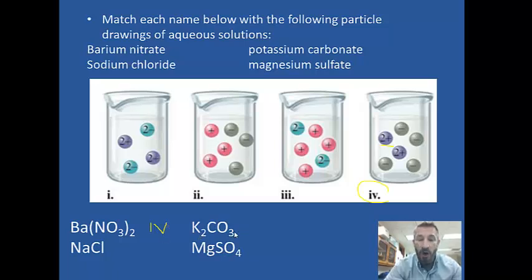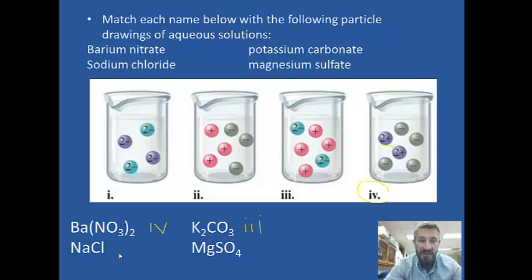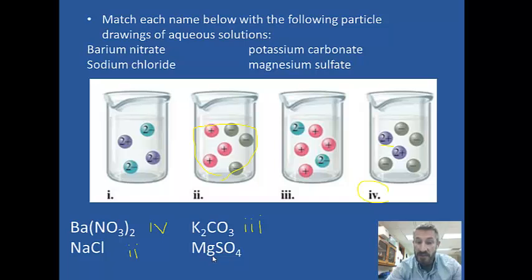Next, potassium carbonate: potassium has a +1 charge and carbonate has a −2 charge, so there's a 2-to-1 ratio — for every 1 negative-2, there should be 2 positive-1s. That corresponds to drawing 3. Next, sodium chloride — sodium is +1 and chloride is −1, a simple 1-to-1 ratio — represented by drawing II. Last, magnesium sulfate: magnesium is 2+ and sulfate is 2−, represented by the first drawing.